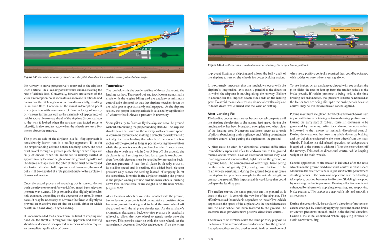A well-executed roundout results in attaining the proper landing attitude, preventing floating or skipping, and allows the full weight of the airplane to rest on the wheels for better braking action. It is extremely important that the touchdown occur with the airplane's longitudinal axis exactly parallel to the direction in which the airplane is moving along the runway. Failure to accomplish this imposes severe side loads on the landing gear. To avoid these side stresses, do not allow the airplane to touch down while turned into the wind or drifting. On an airplane equipped with toe brakes, the pilot slides the toes or feet up from the rudder pedals to the brake pedals, maintaining any rudder pressure that is being held during the transition.